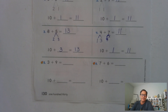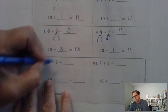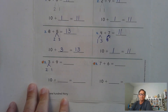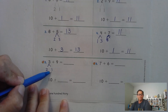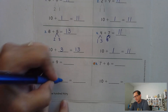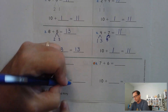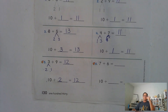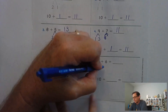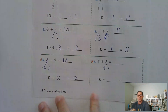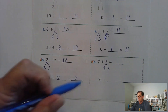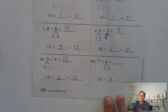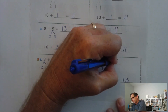Nine plus three equals what? Let's break the three into two plus one. What's nine plus one? 10. Now we have to add the two — 10 plus two is 12. So three plus nine is 12. Seven plus six equals what? Break the six into three plus three, because seven plus three is 10. And now add the other three — 10 plus three is 13.